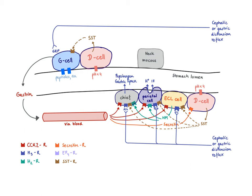There are also other mediators that can increase somatostatin production. One is secretin. Secretin is particularly found in the duodenum, produced by the S cells. It travels as a hormone to the D cell and acts on the secretin receptor to increase somatostatin release.